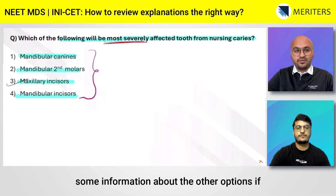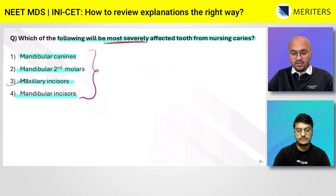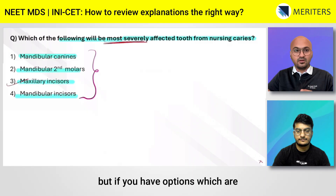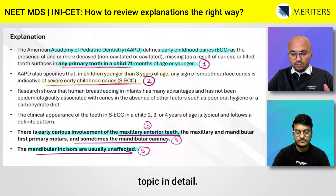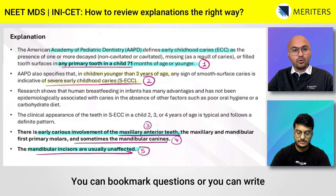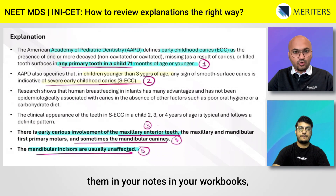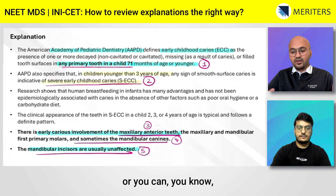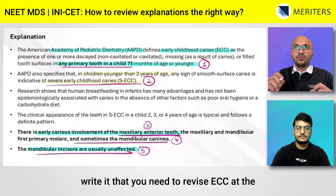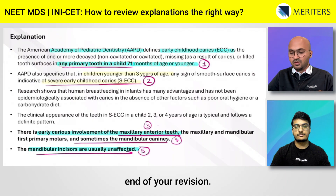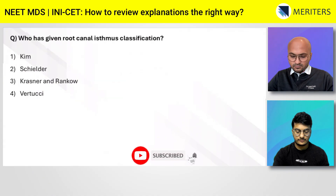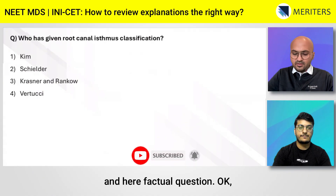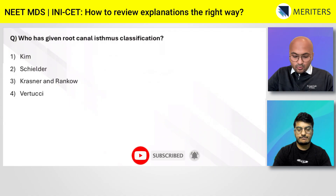To give you an overview: make sure you have information about the other options if they are relevant to the question. If they are made-up options it's okay, but if the options are relevant to the topic, make sure you have more detail about it. You can bookmark questions, write them in your notes or workbooks, or note that you need to revise ECC at the end of your revision phase. Now let's look at another question from endo — a factual question.